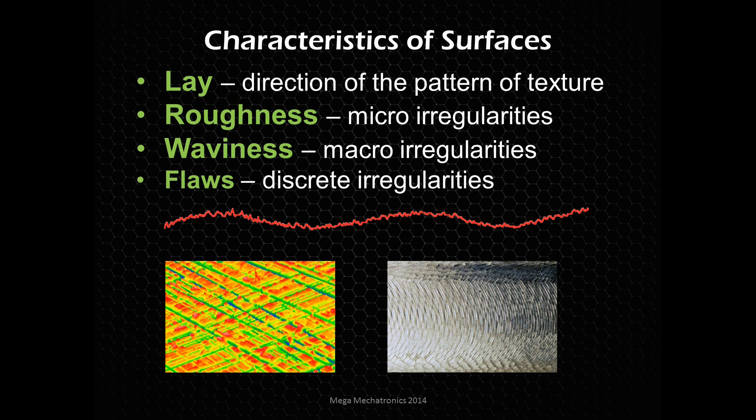And then we have flaws, and these are discrete irregularities. There is no pattern to these flaws. The flaws could be a defect in the material, contamination, tooling marks, something went wrong with the process — possibly a tool broke — things like that. So these are sort of singularities or discrete occurrences.